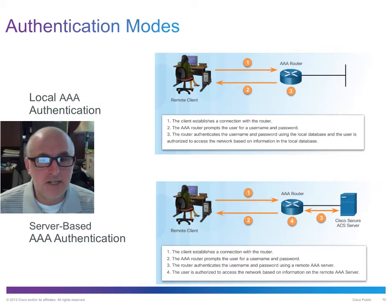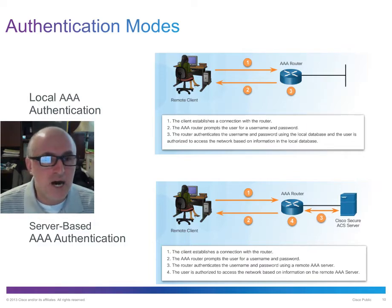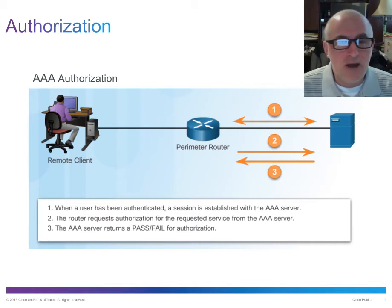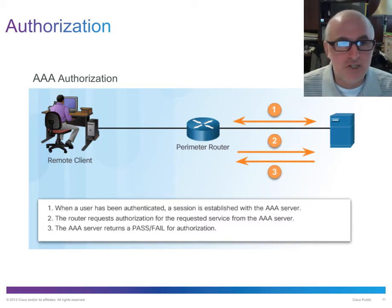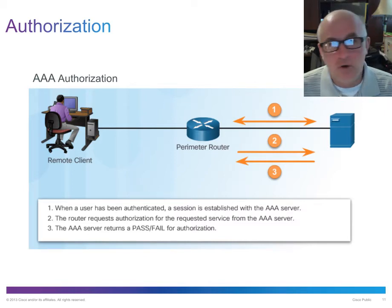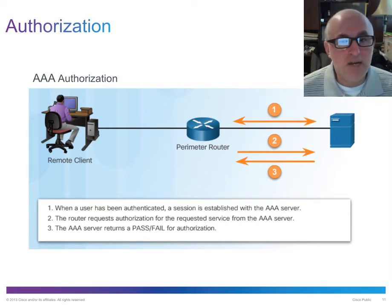If you log into a router, it forwards your username and password to the directory server, which looks it up and sends a thumbs-up or thumbs-down back to the device. Authorization is the next piece — once authenticated, the central server or local database checks access control lists or privilege levels. Privilege level 1 gets only user mode prompt; privilege level 15, the default for Cisco device accounts, gives full access. With a remote server doing authorization, it sends back a list of what is allowed and may granularly check as you attempt things.